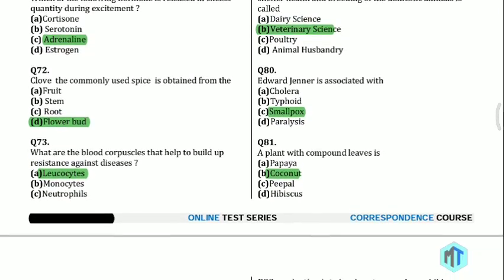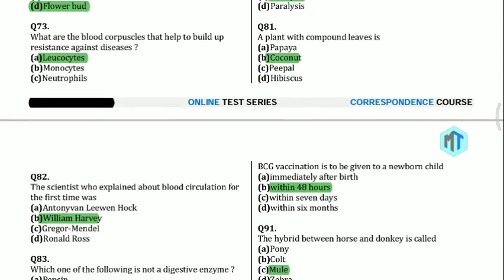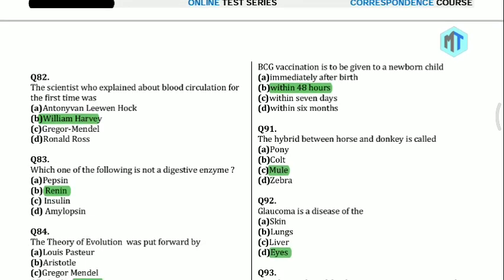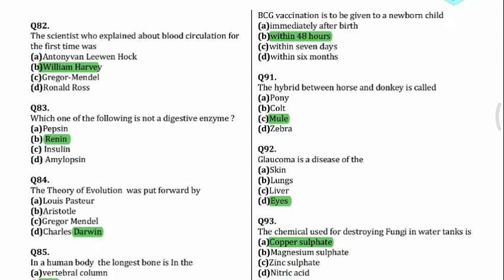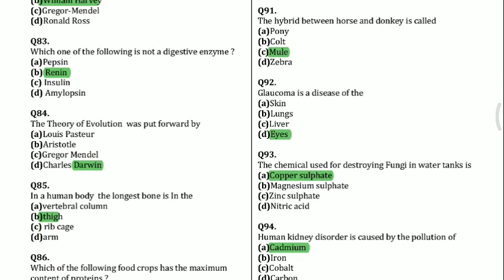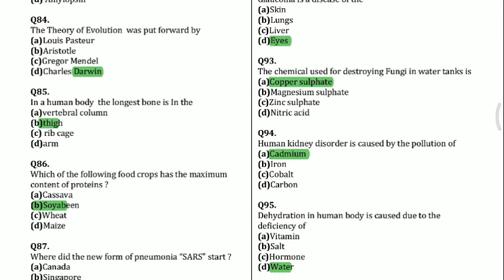Question 80: Edward Jenner is associated with smallpox. Question 81: A plant with a compound leaf is coconut. Question 82: The scientist who explained blood circulation for the first time was William Harvey. Question 83: Which one of the following is not a digestive enzyme? Renin. Question 84: The theory of evolution was brought forward by Charles Darwin.